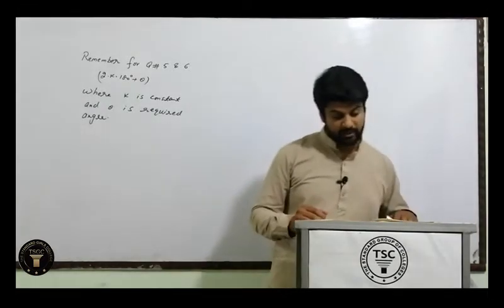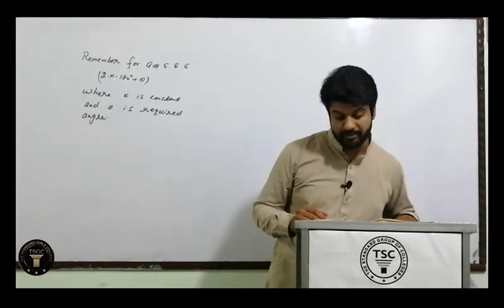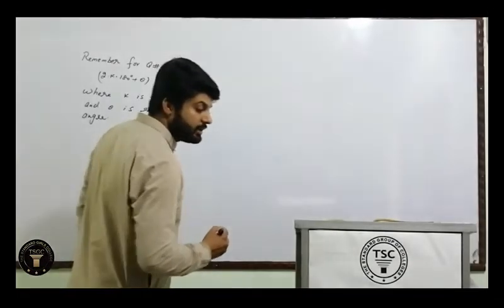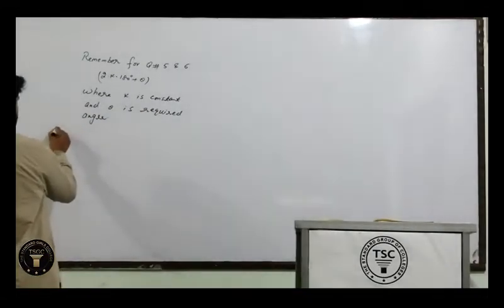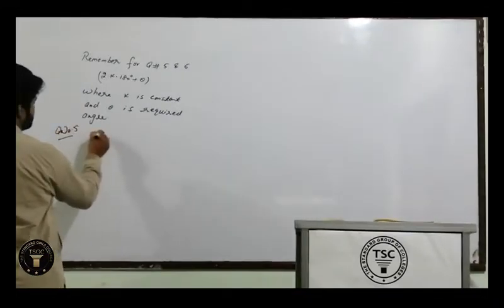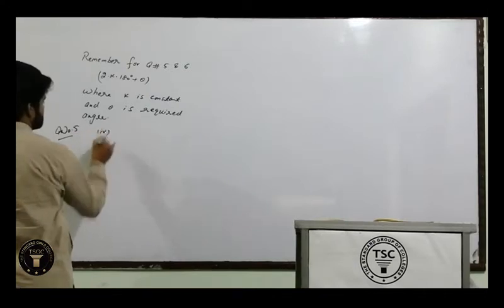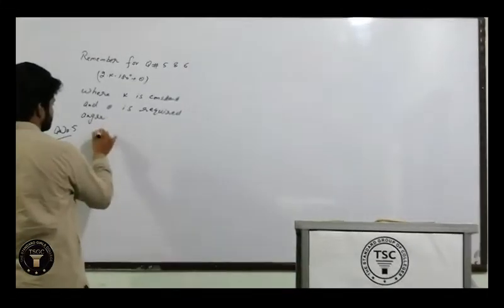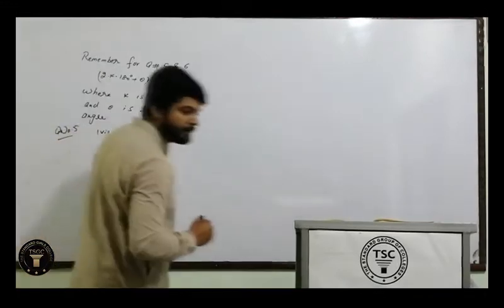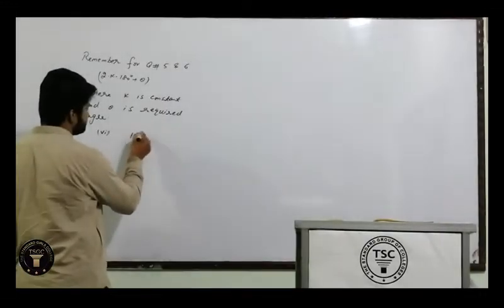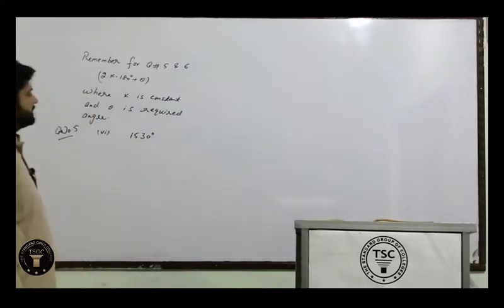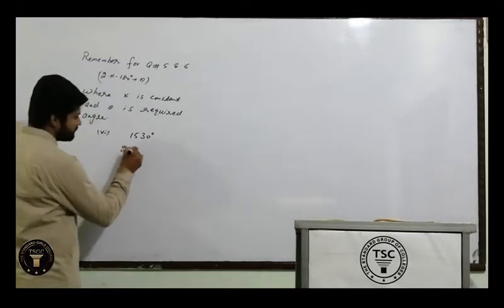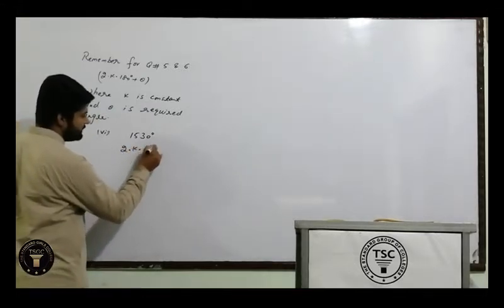Toh ismeh 9.3 ke fifth part mein, sabse pahle degree wale questions dekhein. Fifth ka sixth part hamare paas hai: 1530. Sabse pahle aapne is angle ko break karna hai, aur break karne ka yeh formula hai: 2·k·180° + θ.